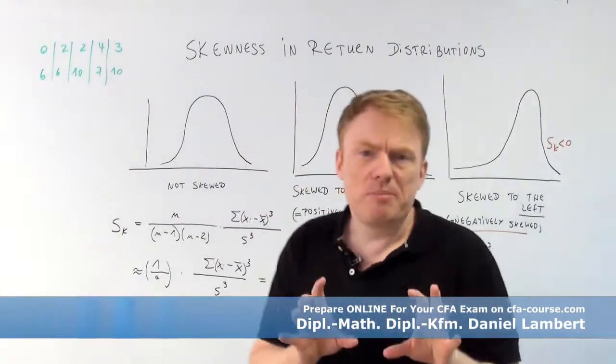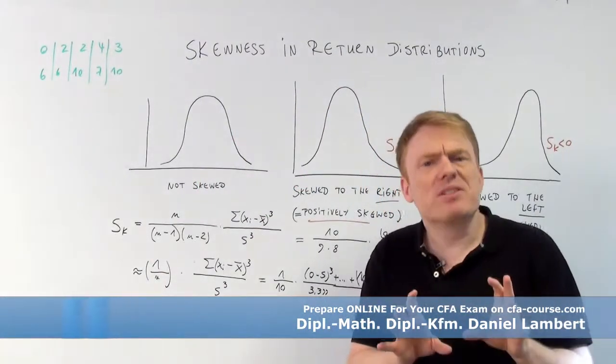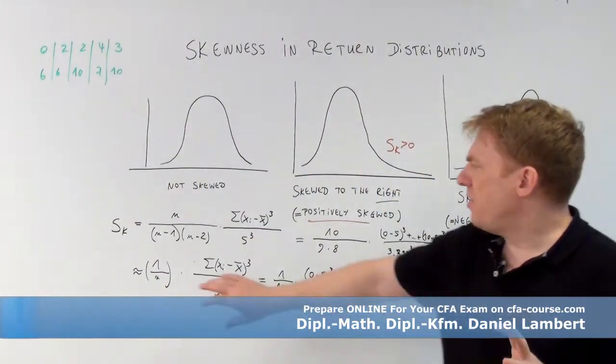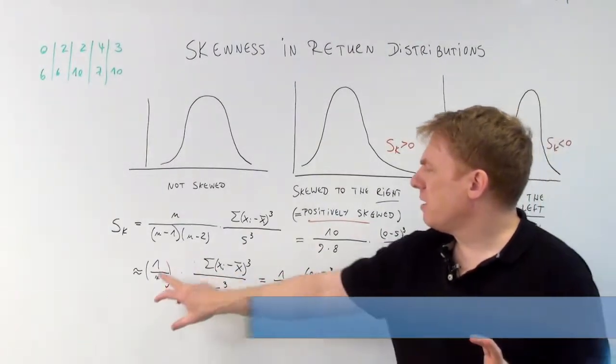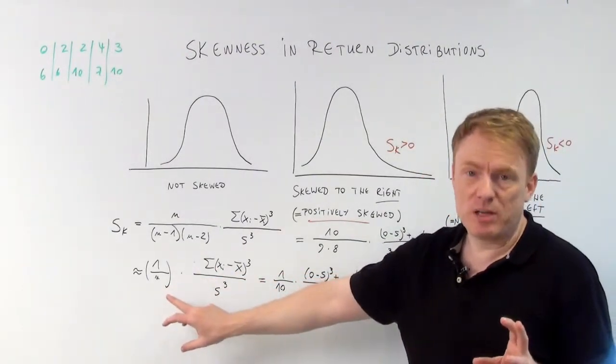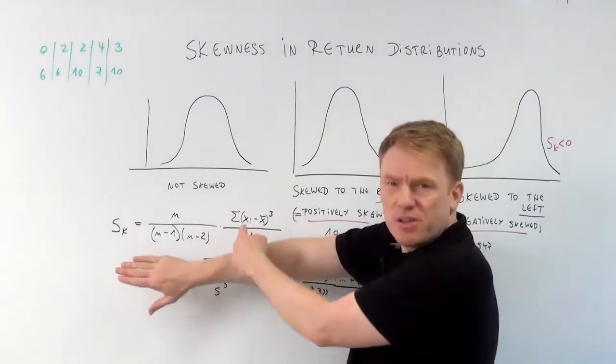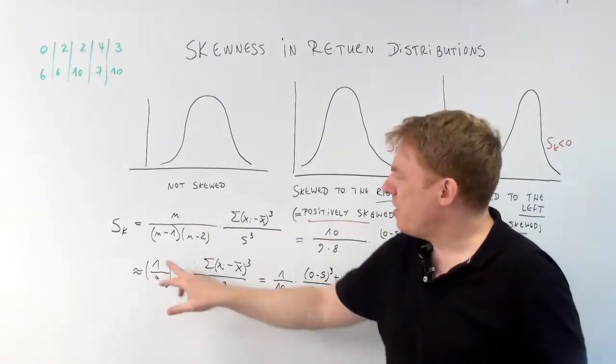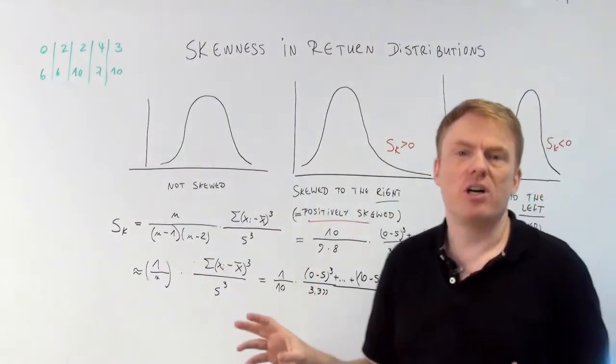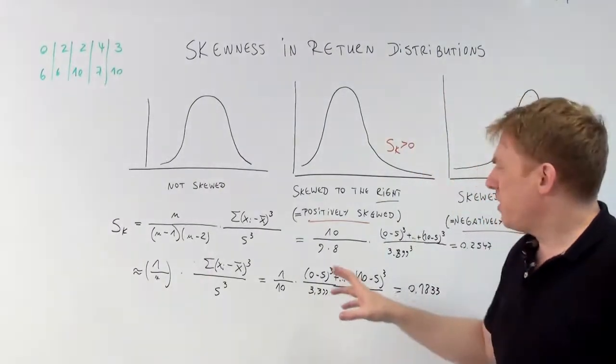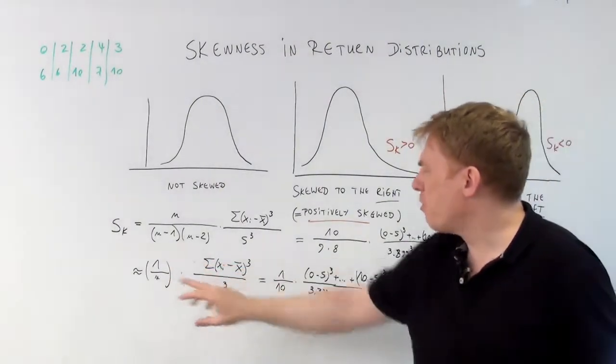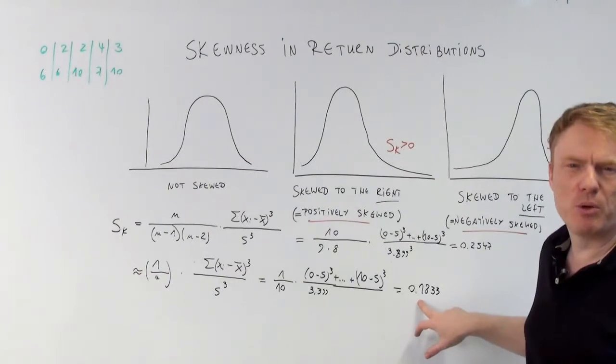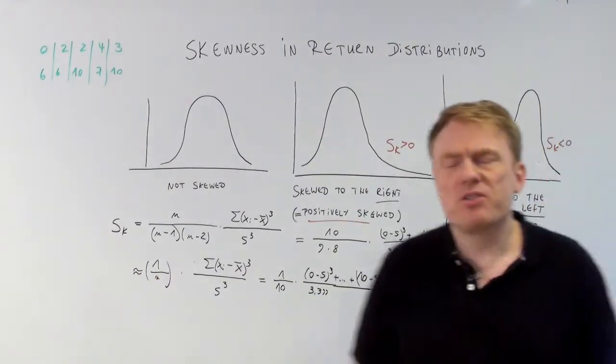Now as the sample size n becomes large, this could approximate our exact result. This is the exact result, whereas this is the approximation. Using those numbers in this formula, we get 0.1833, which is not that bad.